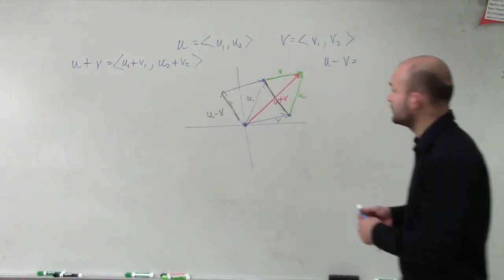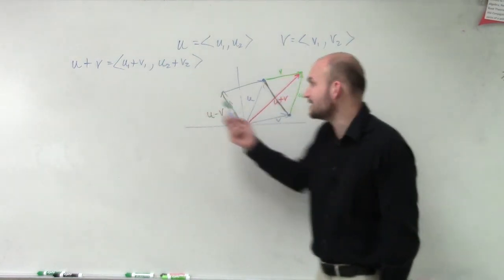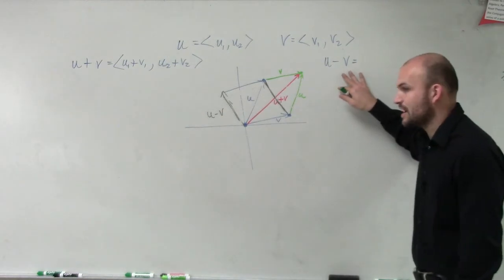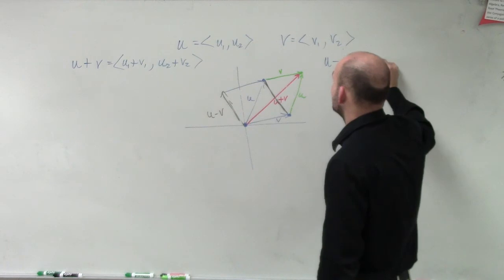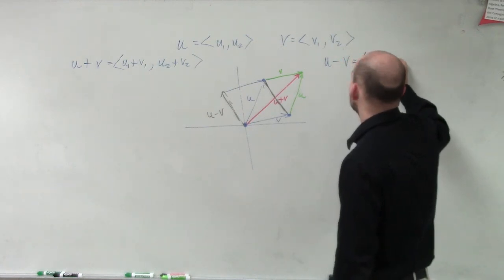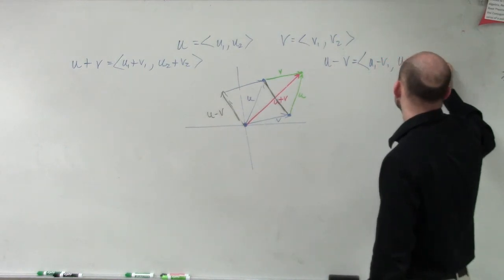So, when looking at this, well, if you understand when you add them up, you add the x's and the y's. So, now with our subtraction, we're going to be doing the exact same thing. So, now it's just going to be u1 minus v1, comma, u2 minus v2.